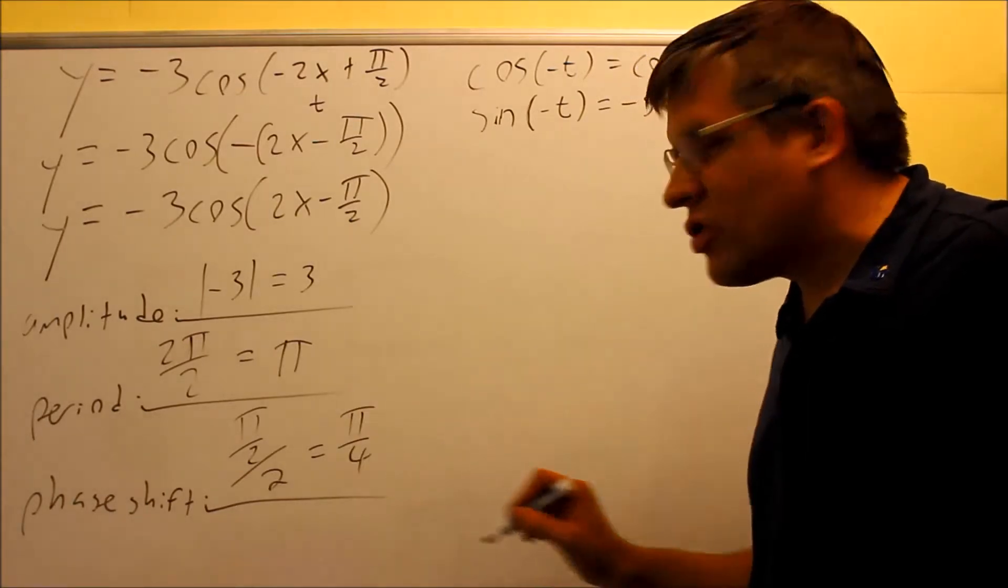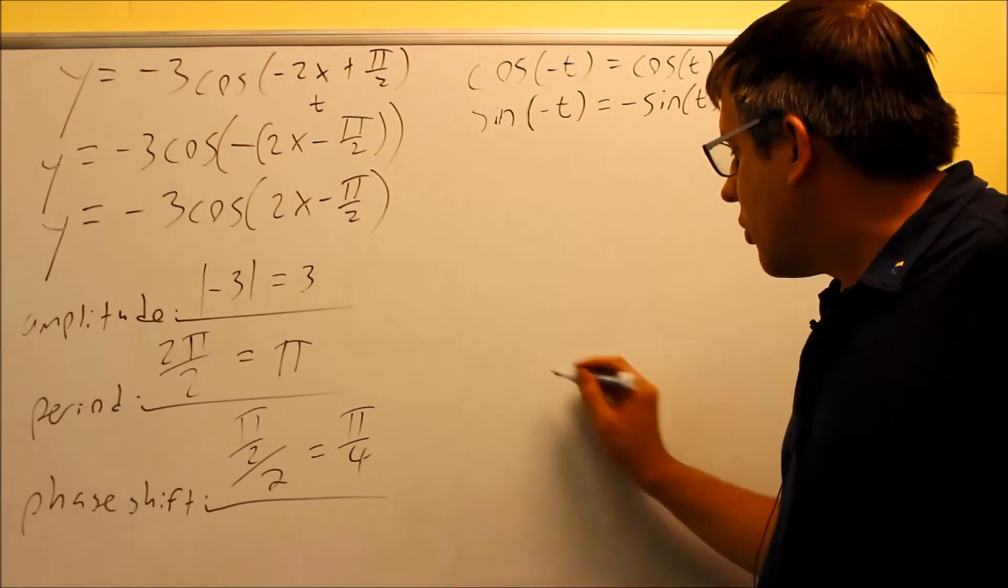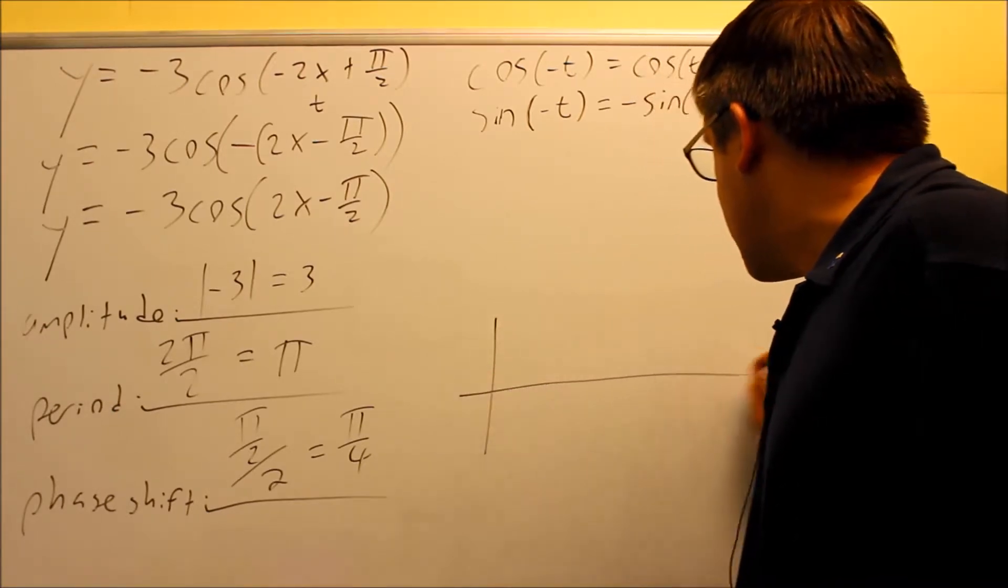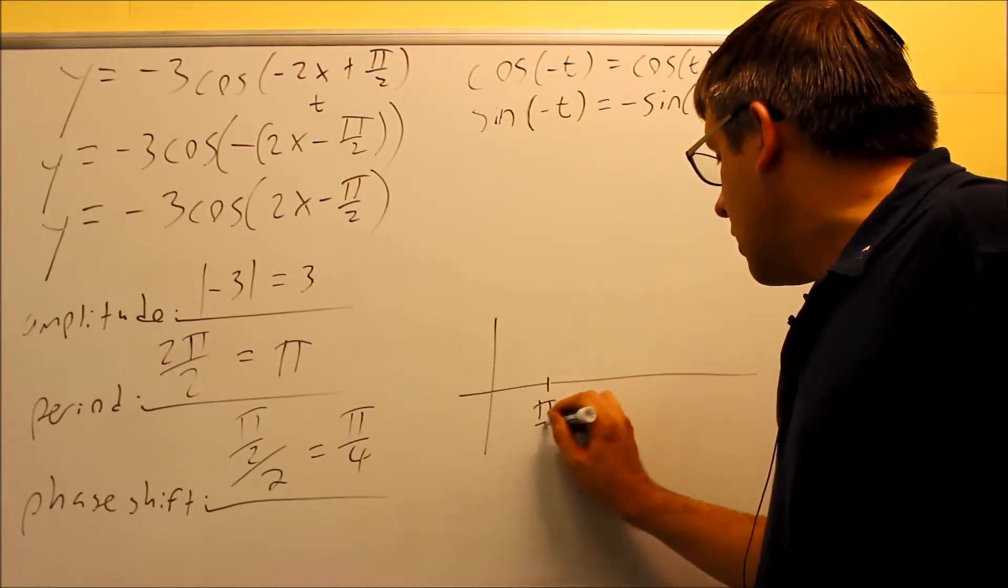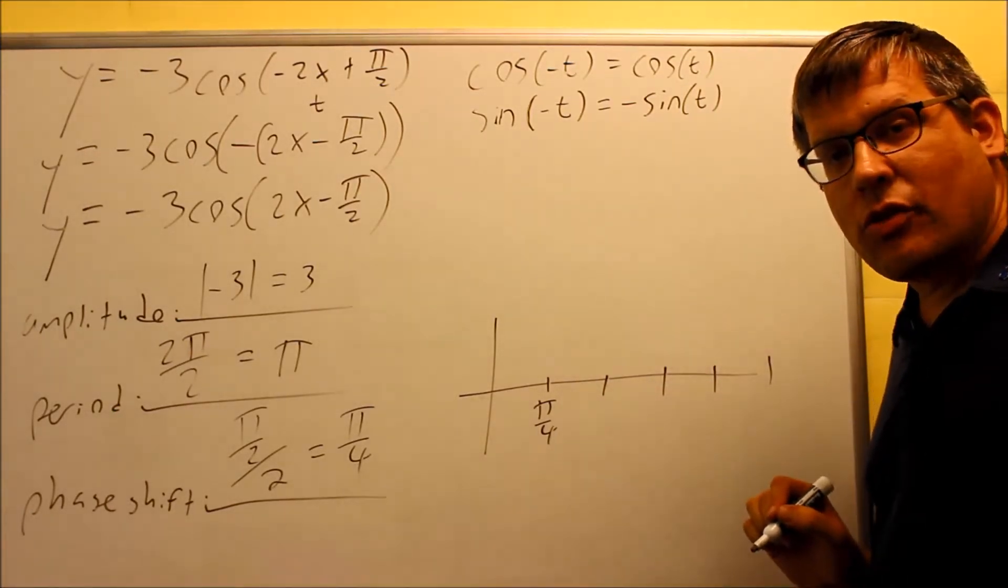This is where the graph is actually going to begin. It begins at positive pi over 4. So I know that I can go ahead and already start my graph here at pi over 4, and then I know that I have to find my four other key points there for that one.